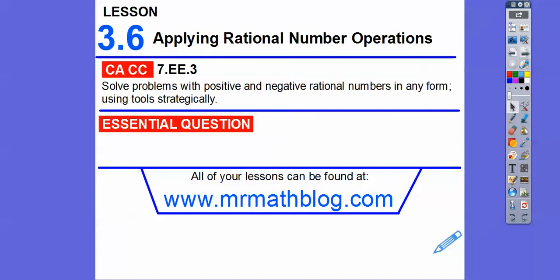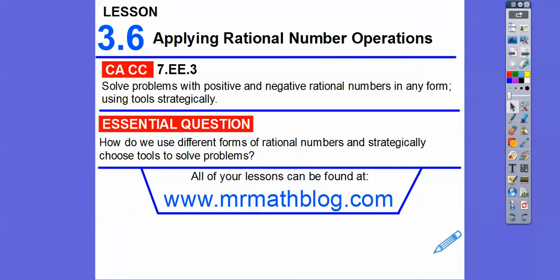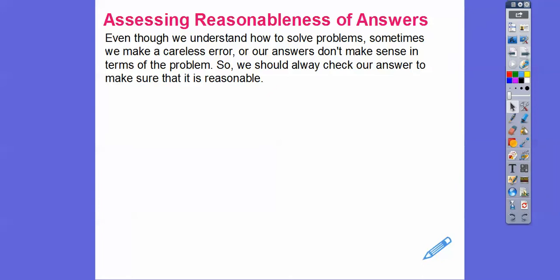So there's our common course strand for our most awesome teachers, and our question is: how do we use different forms of rational numbers — which are fractions and decimals — and strategically choose our tools to solve some problems? So we need to check for reasonableness of answers. Even though we understand how to solve some problems, sometimes we make careless errors. I make careless errors all the time, as you've seen. Our answers don't make any sense in terms of the problem, so we should always check our answers just to make sure that they fit the problem and that they're reasonable.